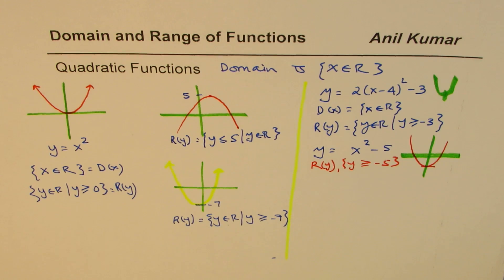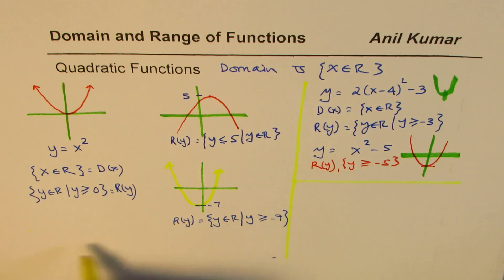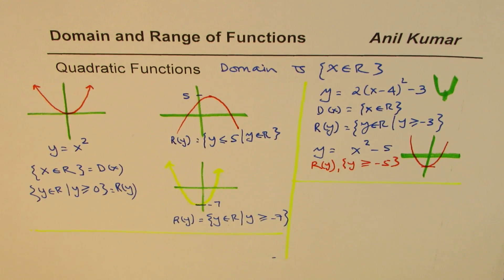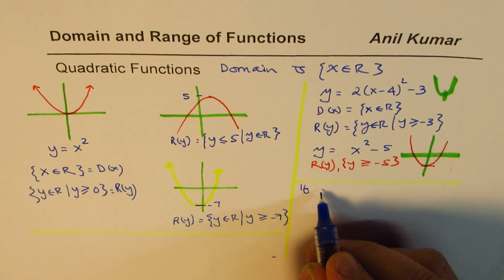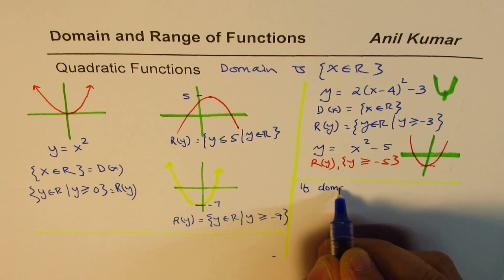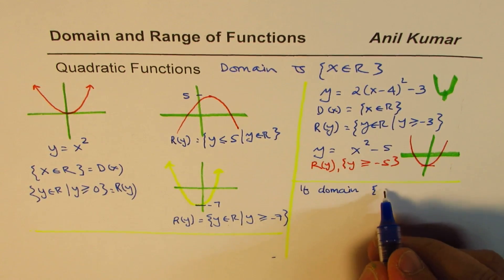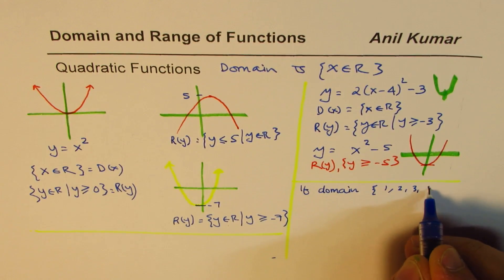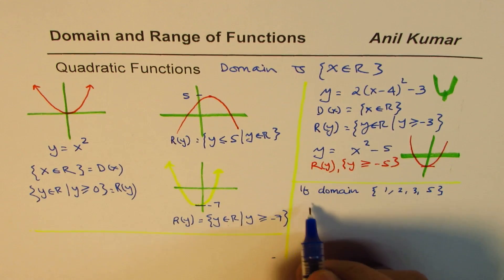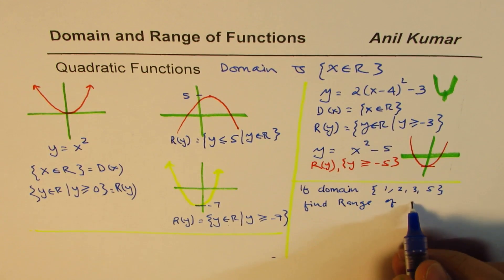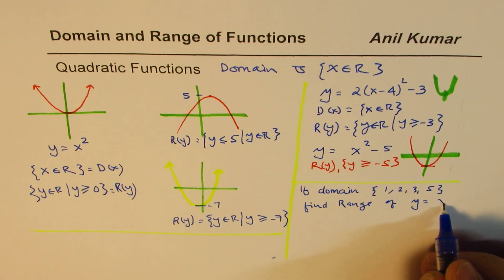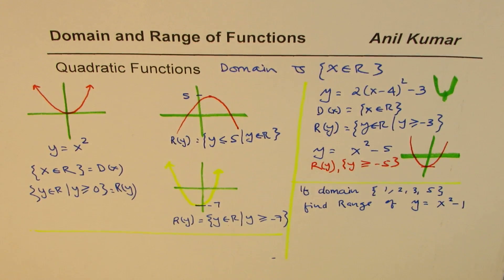Now here is a test question for you. So let me write down the test question. The test question is, if domain is {1, 2, 3, and 5}, find range of y equals x squared minus 1. So that is the question for you.